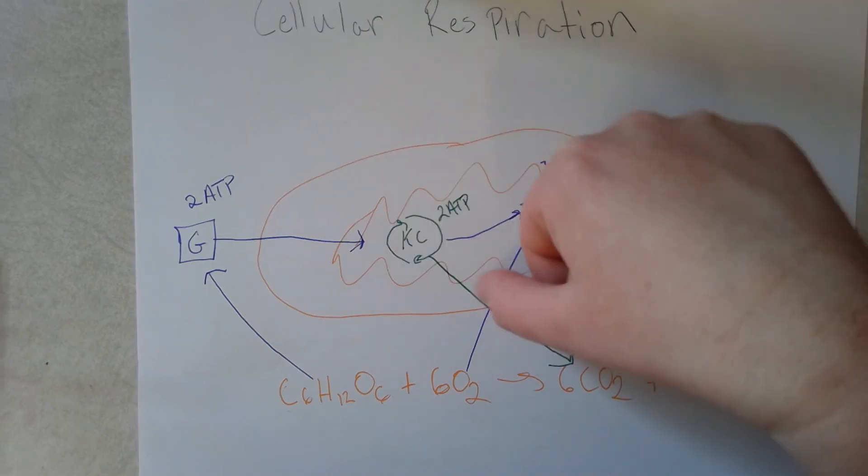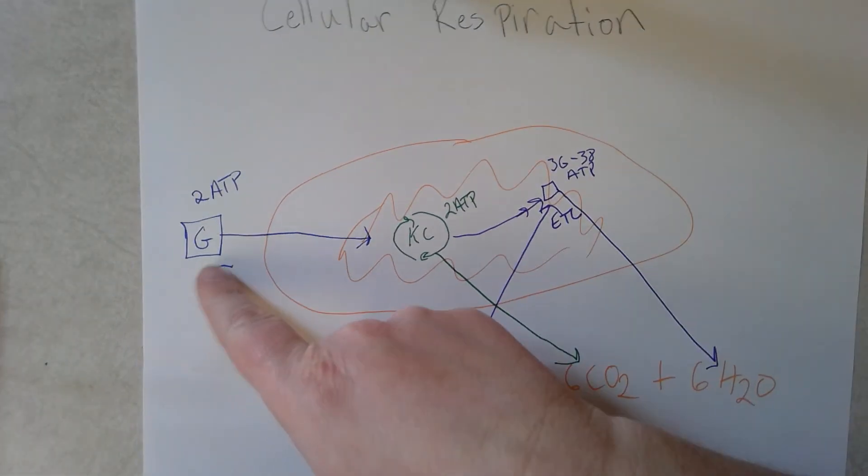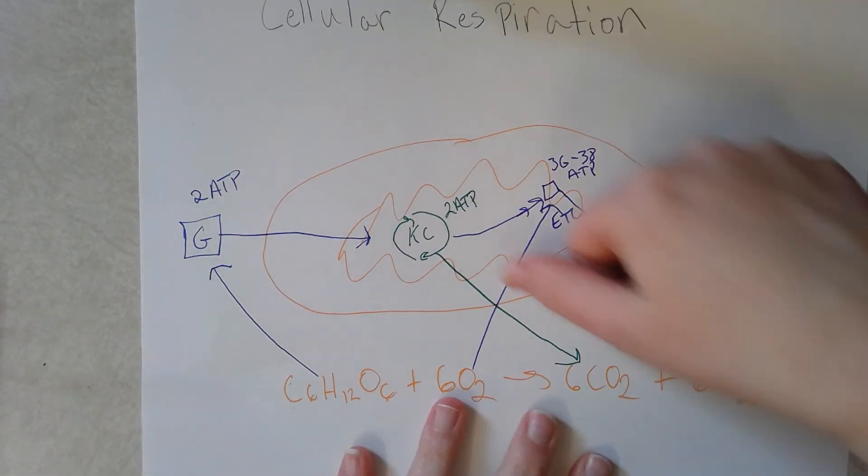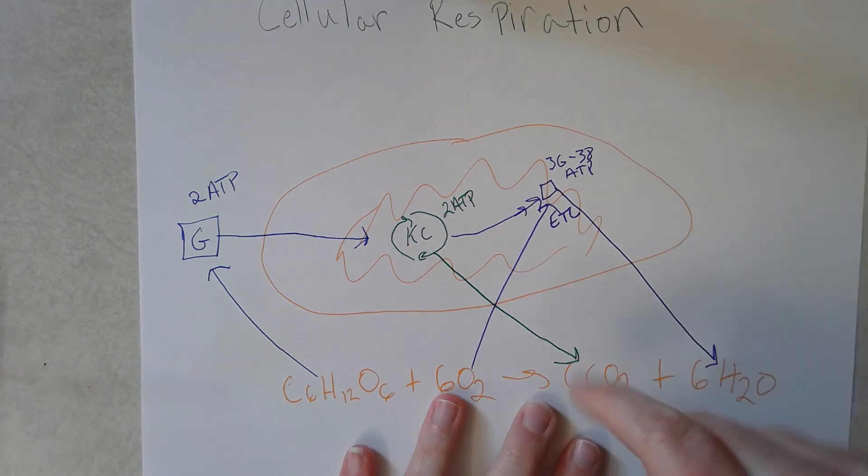And the Krebs cycle gives off CO2 - you get some CO2 from glycolysis as well, but that's where you get this part of the chemical equation. And then the products of the Krebs cycle and oxygen go into the electron transport chain.